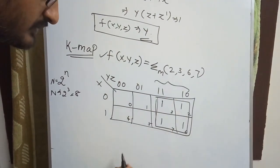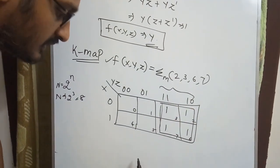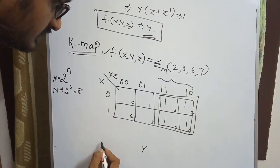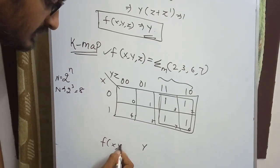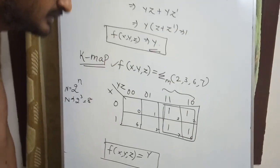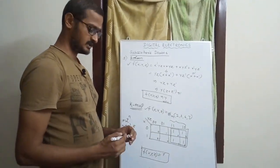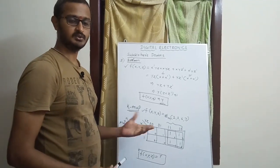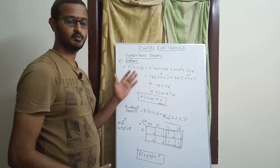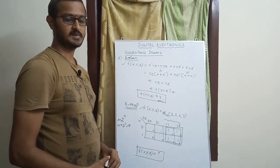So y is the equation: F(x, y, z) equals y. Using K-map, we get the same answer. Thank you!